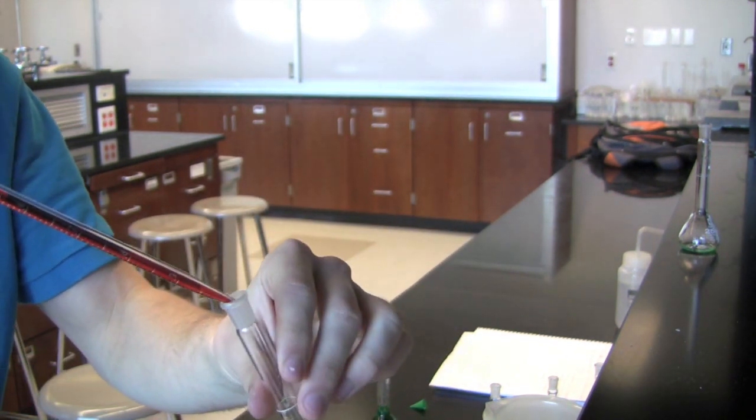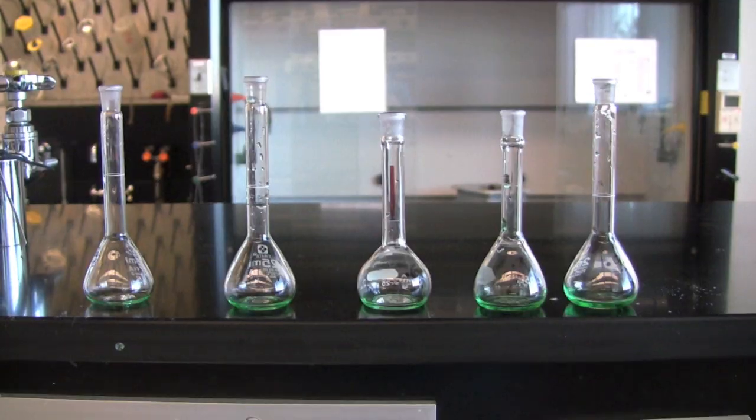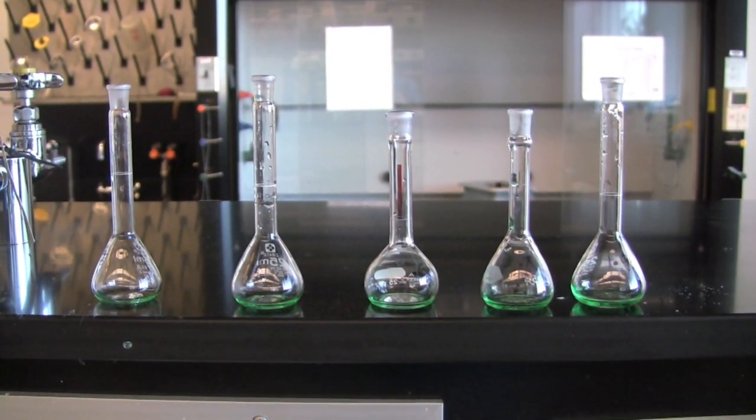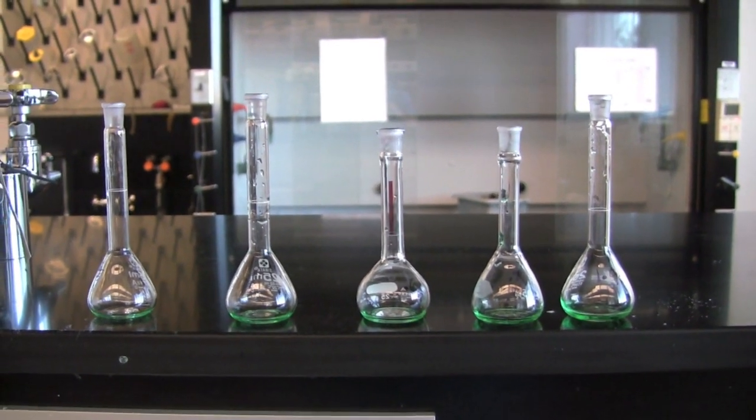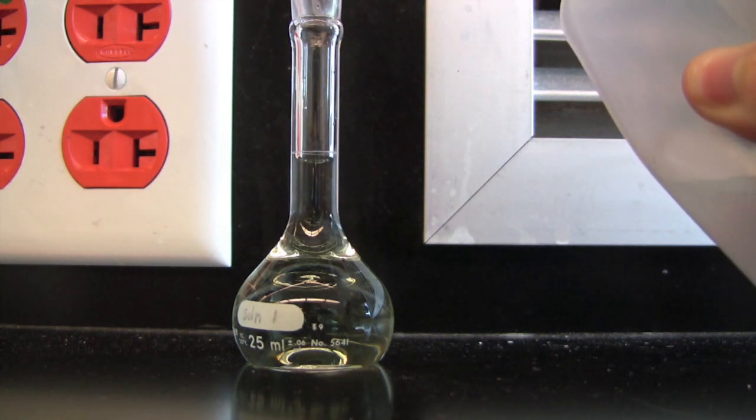After the volumetric flasks have been completely filled with each appropriate solution, begin adding water until each volumetric flask reaches the 25 milliliter line located at the center of the volumetric flask.